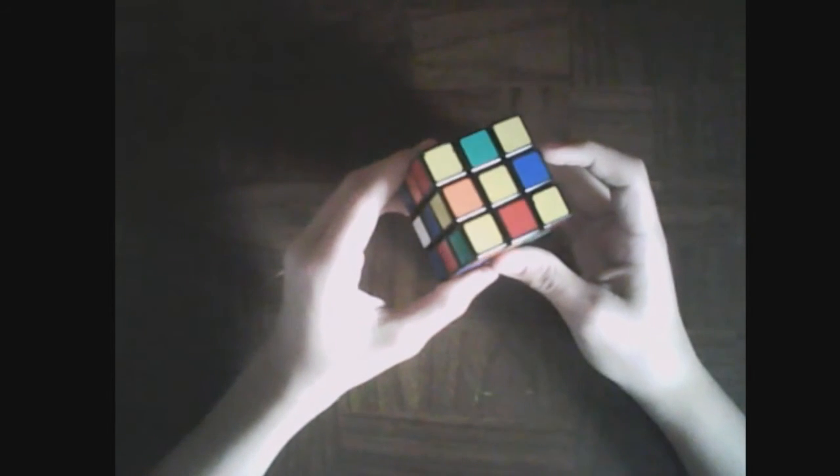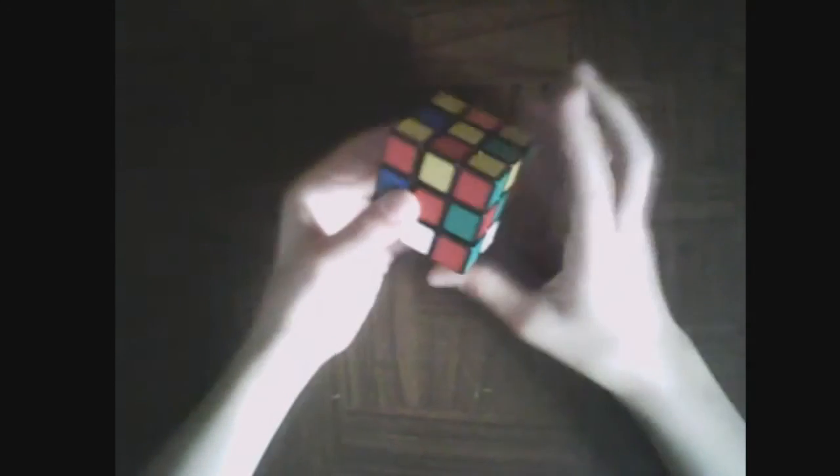PLL. Ah, PLL's. Oh, it's gonna be hard. Oh, this is a pair together. This is a G-perm, isn't it? Alright, that's opposite. That's opposite. So. Is that it? I think that's it. Here we go.